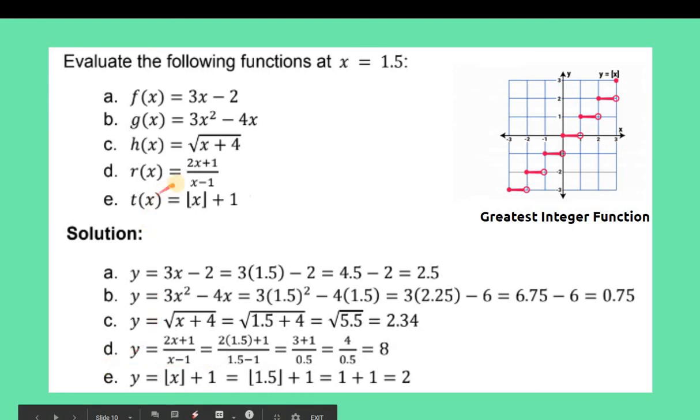And then letter D, you have 2x plus 1 over x minus 1. So (2x + 1)/(x - 1) equals 2 times 1.5 plus 1, and then 1.5 minus 1. You follow GEMDAS. 2 times 1.5 is 3 plus 1 over 1.5 minus 1 or 0.5. Therefore, you will have 4 over 0.5. So 4 divided by 0.5 equals 8.